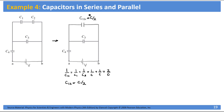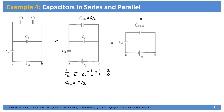Now let's simplify further by considering C12 and C3 connected in parallel. I'm going to call the equivalent capacitance of these C123. When you have two capacitors connected in parallel, the equivalent capacitance is simply the sum of the individual capacitances. So C123 equals C12 plus C3, which is C over 2 plus C, giving us an equivalent capacitance of 3C over 2.